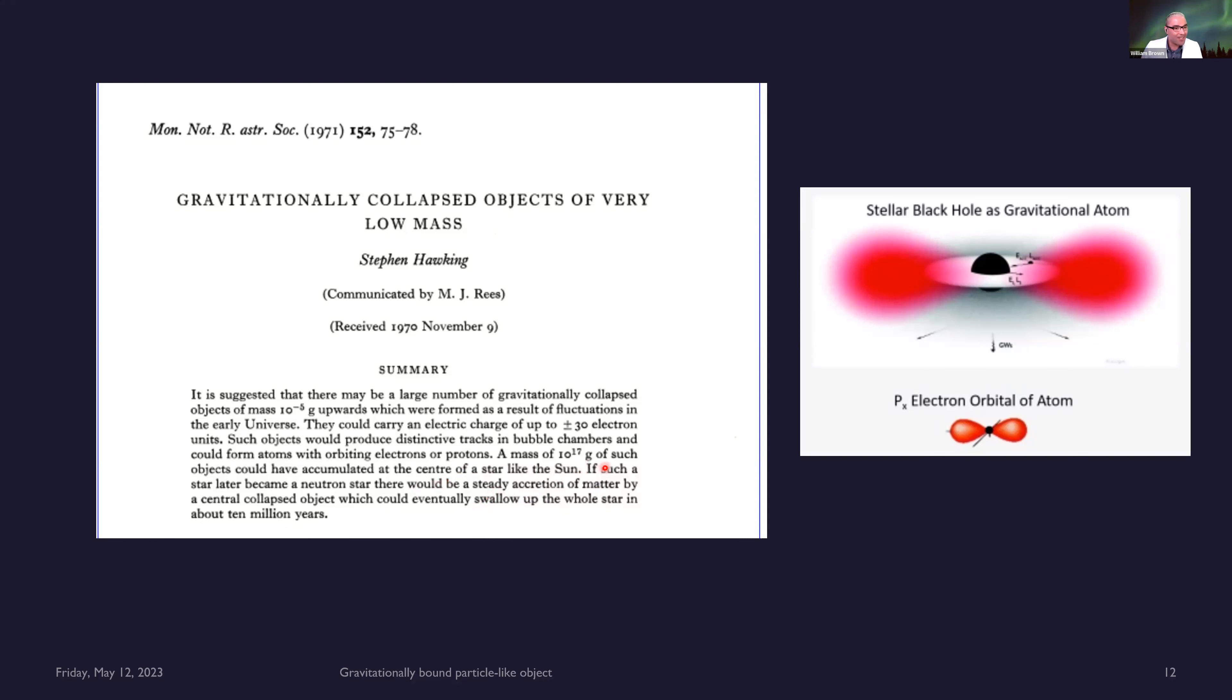A mass of 10 to 17 grams of such objects could have accumulated at the center of a star like the sun. Stephen Hawking is saying how we should expect or anticipate to see black holes at the center of stars. And again, that's one of our key postulates.